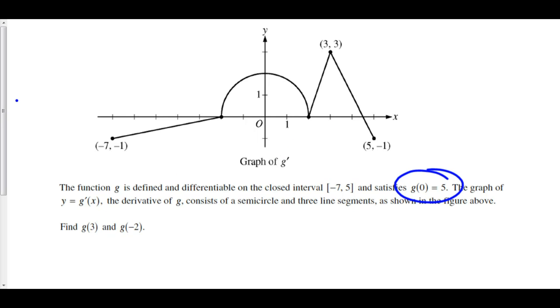Now, let's take a look at g of negative 2. Similarly, g of negative 2 is equal to the initial value given, that's g of 0, plus the net change from 0 to negative 2 of g prime of x dx.